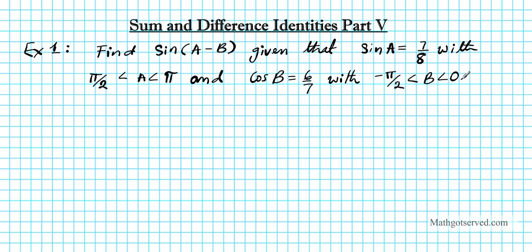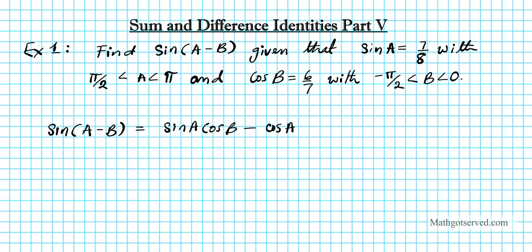So let's go ahead and find this. The first thing we're going to do is write down the formula for the difference identities for sine. So we have: sine A minus B equals sine A cosine B minus cosine A sine B.